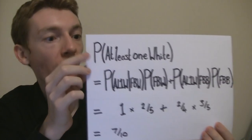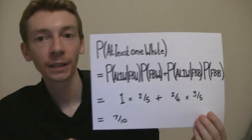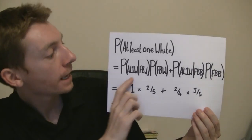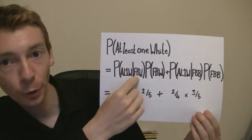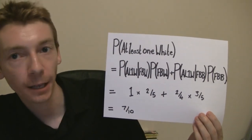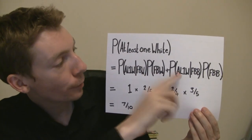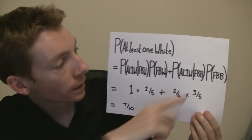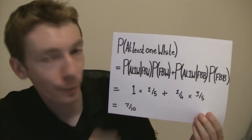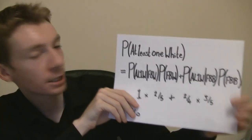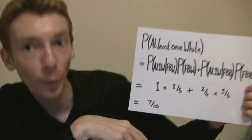If I want to find out the probability of at least one white ball, I can write it like this. The probability of at least one white ball is the probability of at least one white ball given that the first ball was white, times the probability that the first ball was white, plus the probability of at least one white ball given the first ball was black, times the probability that the first ball was black. Let's look at these terms one by one.